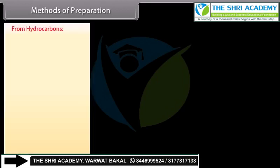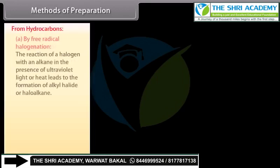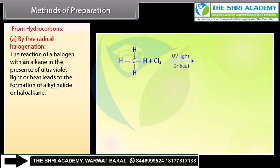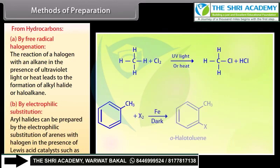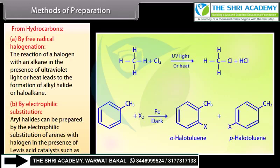From hydrocarbons: by free radical halogenation, the reaction of a halogen with an alkane in the presence of ultraviolet light or heat leads to the formation of alkyl halide or haloalkane. By electrophilic substitution, aryl halides can be prepared by the electrophilic substitution of arenes with halogen in the presence of Lewis acid catalysts such as iron or iron(III) chloride.